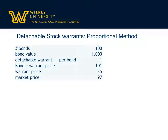For our example, we're going to have 100 bonds, and the bond value is $1,000 apiece, and each bond has one warrant. Together, they're being sold at 101 — that means 101%, or 1.01 times par. The warrants can be individually priced at $35 a warrant, and the market price of the bonds is $97, which means each $1,000 bond is really only going to be $970. So your mind should be thinking there's a discount on the bonds, and since the bond and warrant together combine to 101, there's a value to the warrant.